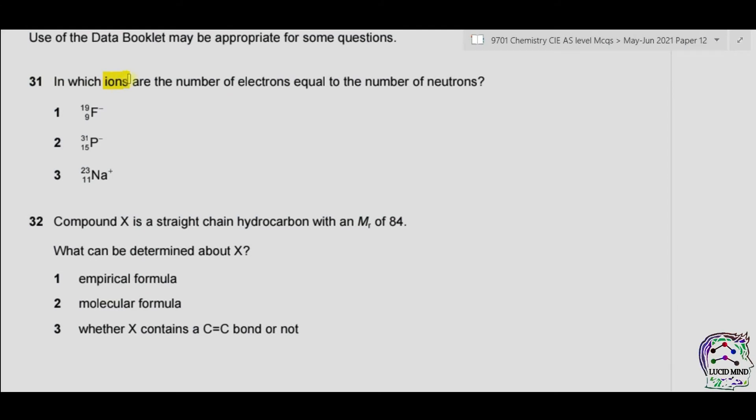Question 31. In which ions are the number of electrons equal to the number of neutrons? We can find electrons by looking at the charge. Proton number is 9, the charge is minus 1, so addition of 1 electron takes place. So 9 plus 1, it becomes 10 electrons. Number of neutrons can be found by subtracting the mass number from atomic number, 19 minus 9, it becomes 10 neutrons.